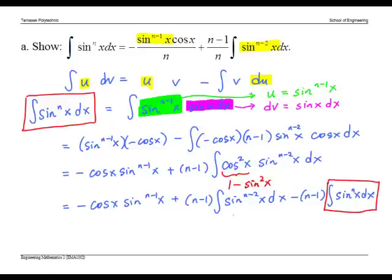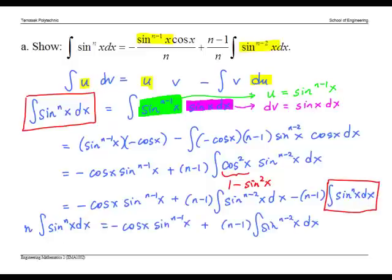Notice that the integral of sin^n x appears on both sides. We can gather them so that 1 plus (n-1) equals n times the integral of sin^n x. Dividing both sides by n, we have the statement as required.